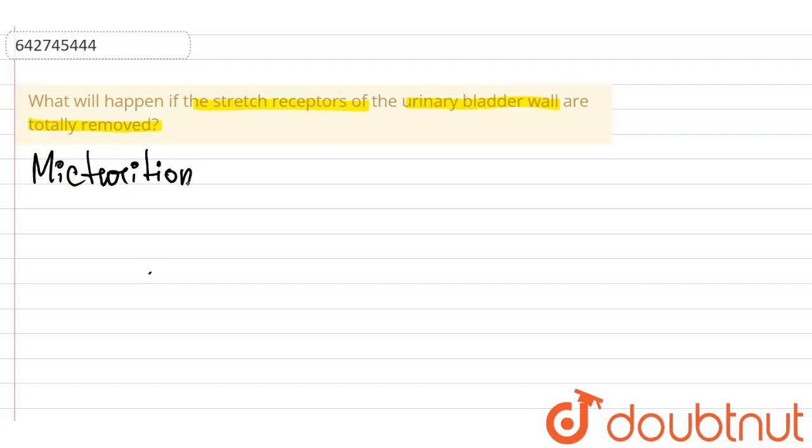Micturition is the process by which the urinary bladder empties when it becomes filled, and this involves two major steps. Firstly, the bladder fills progressively until the tension in its walls rises above a threshold level. So the first step is rapid filling.